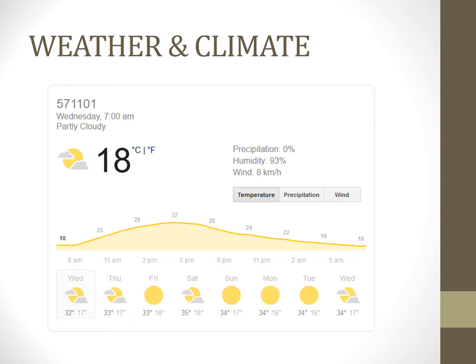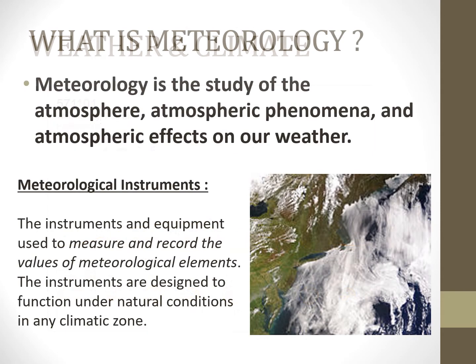The question is, what is this field of study called, and how are the different elements of the weather measured? We shall be able to answer these questions by the end of this presentation. The study of the atmosphere, atmospheric phenomena, and atmospheric effects on our weather is called meteorology. Meteorological instruments are the equipment designed to function under natural conditions in any climate zone to measure and record the values of meteorological elements.